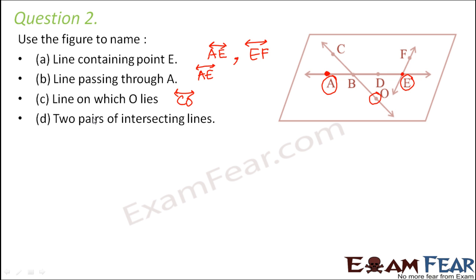Two pairs of intersecting lines. So where do you see intersecting lines? Wherever two lines have a common point. So this is one line, this is another line and these two lines have a common point here.